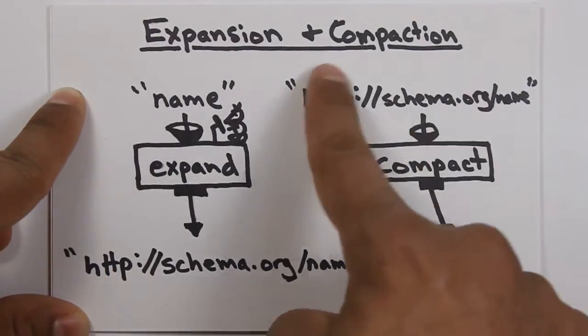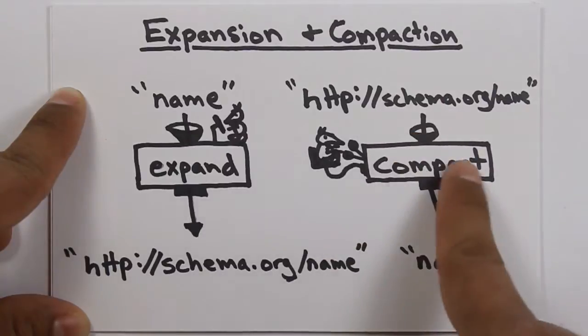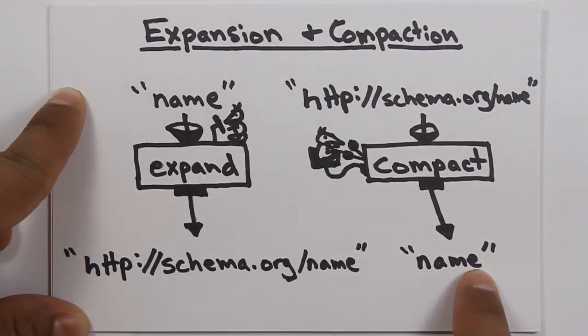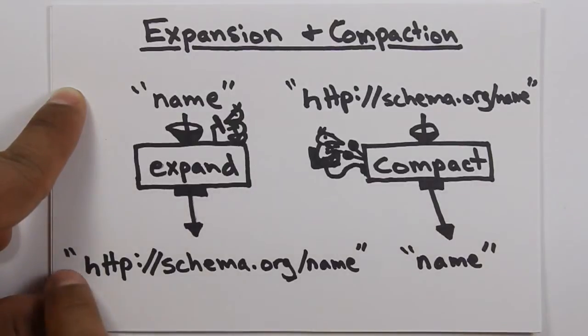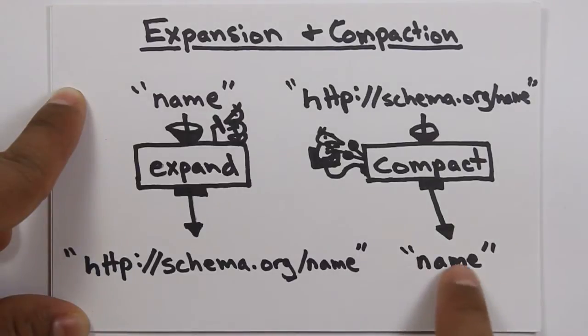It takes a long URL, puts it through the compaction algorithm, and spits out a short, easy-to-remember, easy-to-use identifier. So, this is the data that machines want to use, and this is the data that most web developers want to use.